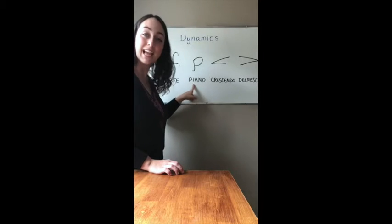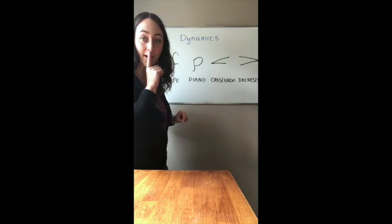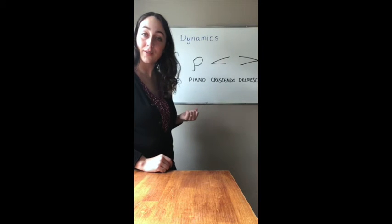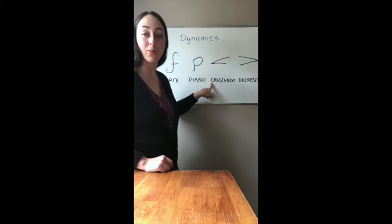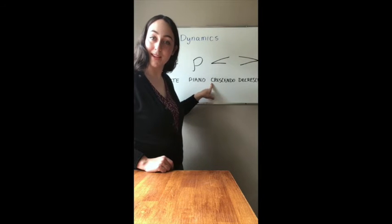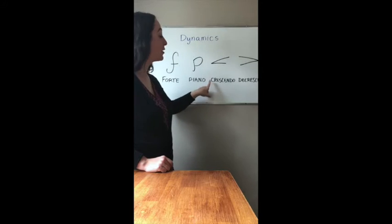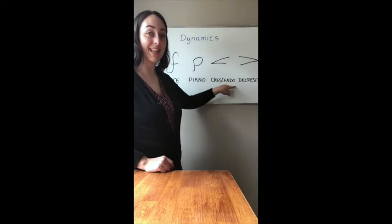The second dynamic that we learned was piano, and piano means the music is soft. Can you say piano? The third dynamic we learned was crescendo. Do you remember what that means? It means the music goes from quiet to loud.